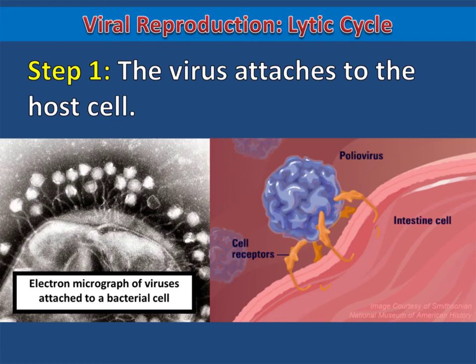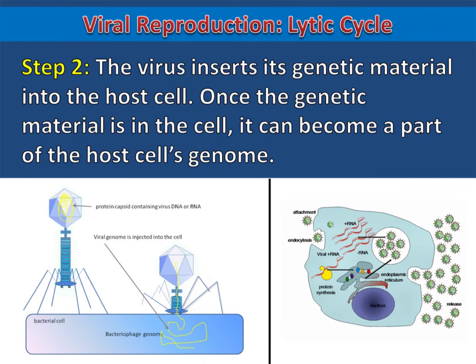In the first step of viral reproduction, the virus attaches to the host cell. Surface markers on the virus attach to receptor proteins in the cell's membrane. Then, the virus inserts its genetic material into the host cell.